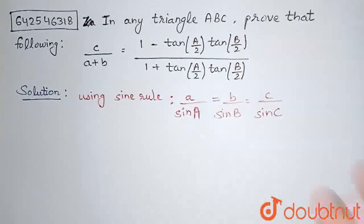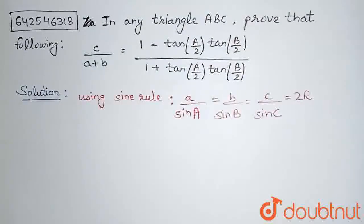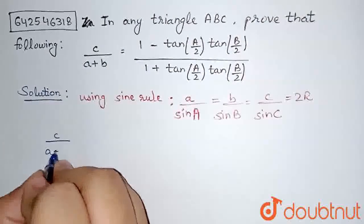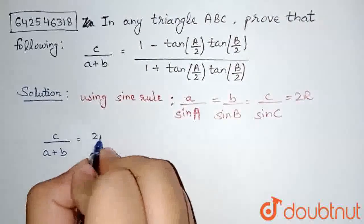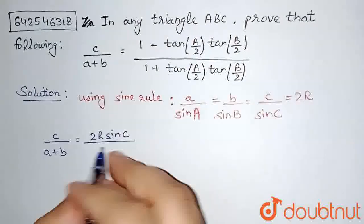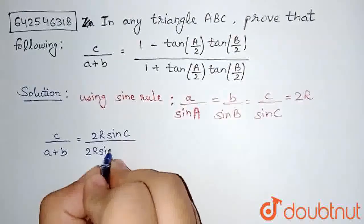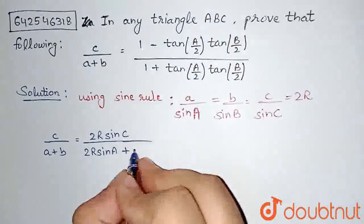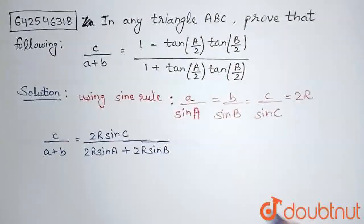This is in total equal to 2R. If I now substitute the values, c divided by (a + b) — c will be 2R·sinC, divided by (a + b). A I can write as 2R·sinA, plus 2R·sinB.